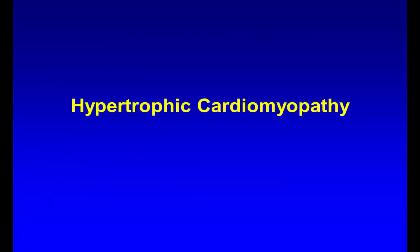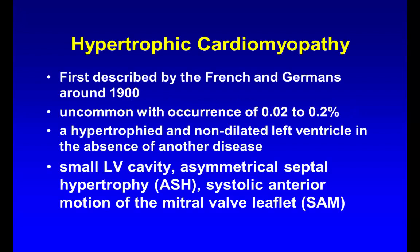Now let's talk about hypertrophic cardiomyopathy. It was first described by the French and Germans around the 1900s and is very uncommon. It can be congenital or acquired and is characterized by marked ventricular hypertrophy without dilation. Unlike dilated cardiomyopathy — which is systolic dysfunction — hypertrophic cardiomyopathy involves diastolic dysfunction, but without any increased afterload.